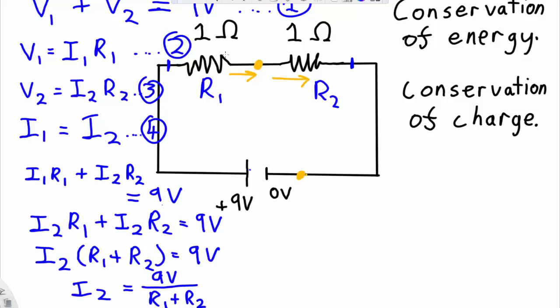And in this case, I know that both R1 and R2 are equal to 1 ohm each. So that gives me 9 volts over 2 ohms, which is equal to 4.5 amps.